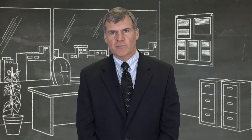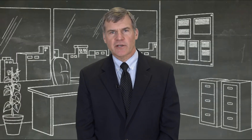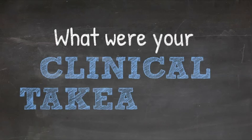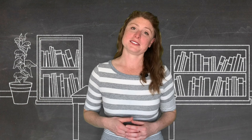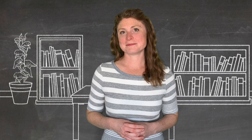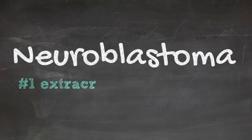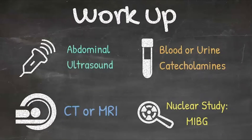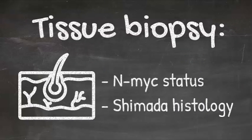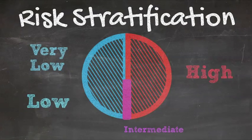Now that we've reviewed the essentials of neuroblastoma, here are the key clinical takeaways. Neuroblastoma is the most common extracranial solid tumor in children. It often presents with an abdominal mass. Workup involves abdominal ultrasound, blood work, MIBG scan, and cross-sectional imaging. Get tissue through open, laparoscopic, or core needle biopsy. Post-biopsy staging is stratified into very low, low, intermediate, and high risk.